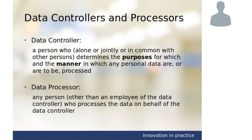An important distinction is whether you're a controller or a processor. Some people believe you're either a controller or a processor for life, but the reality is that it depends on the activity you're doing on any given piece of business. You might find that two businesses — for the purposes of what the processor is doing for the controller, for example running their payroll — that's a strictly processing activity. But if the controller says 'we're also happy for you to use some of the personal data we're sending you for marketing purposes,' then at that point the processor is also a controller for those purposes. It's very important that's not lost sight of because the rules are different for both.